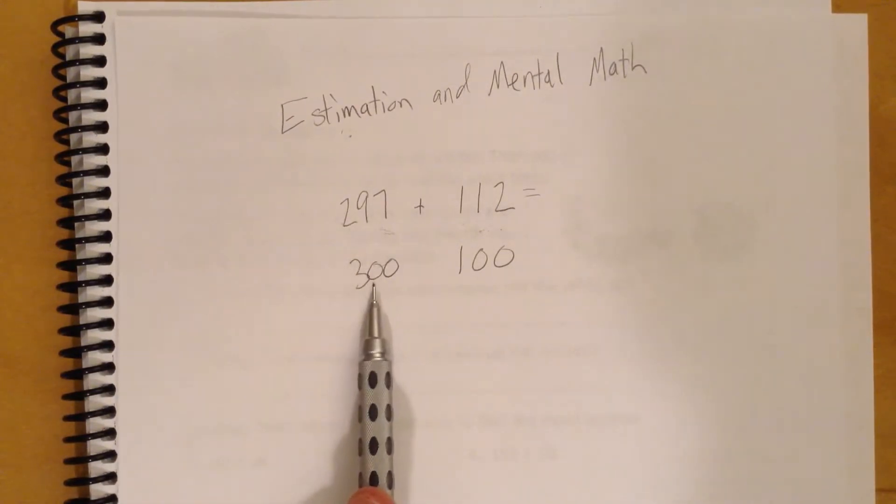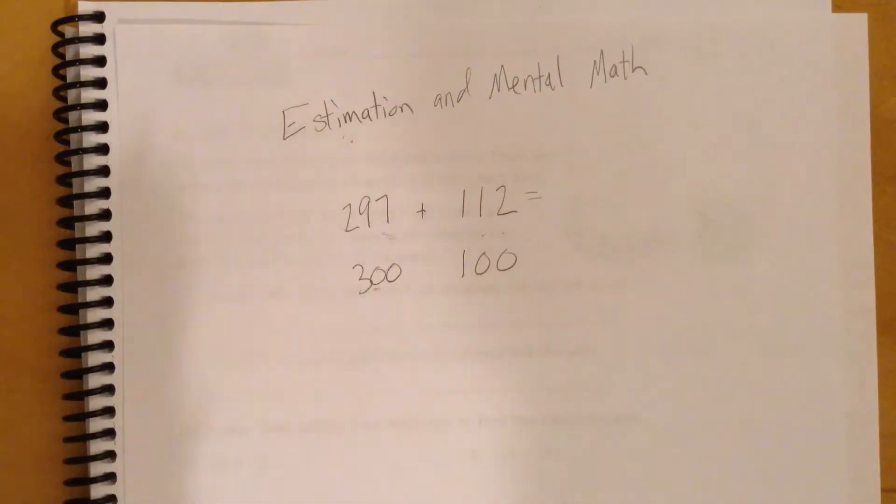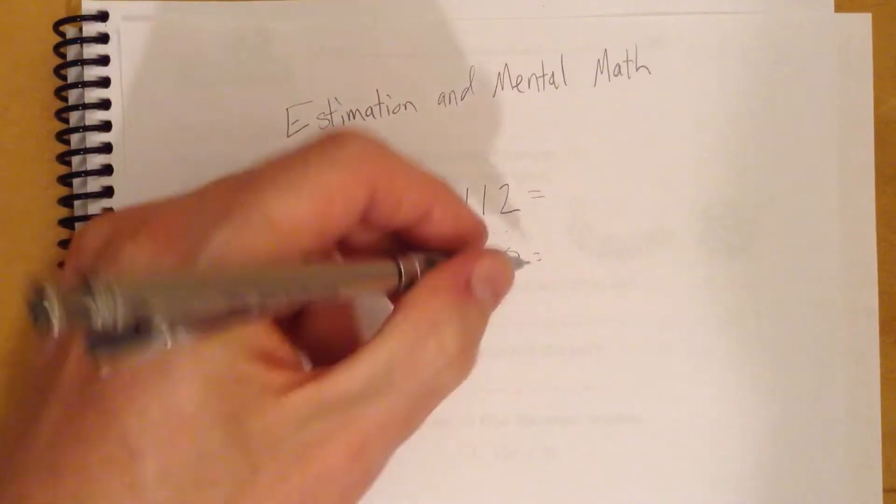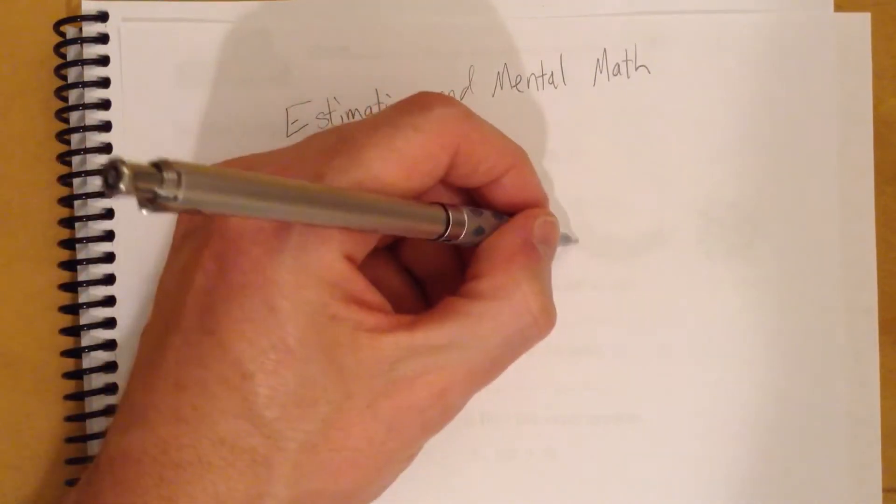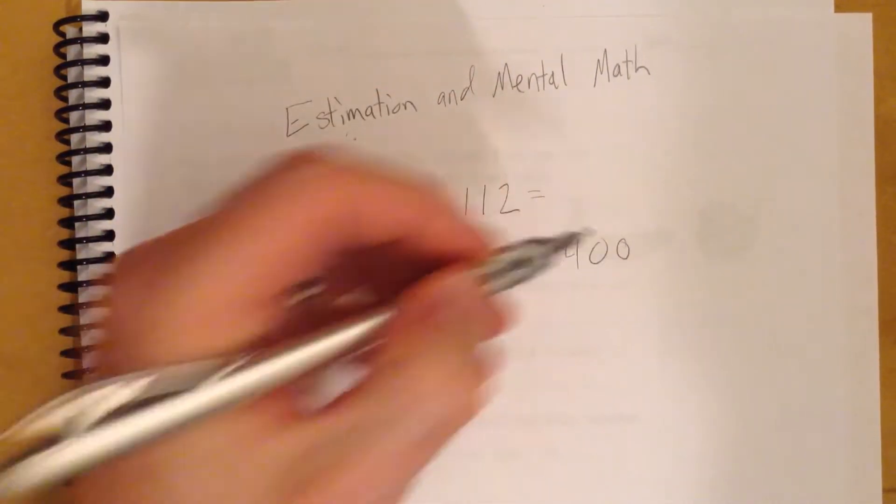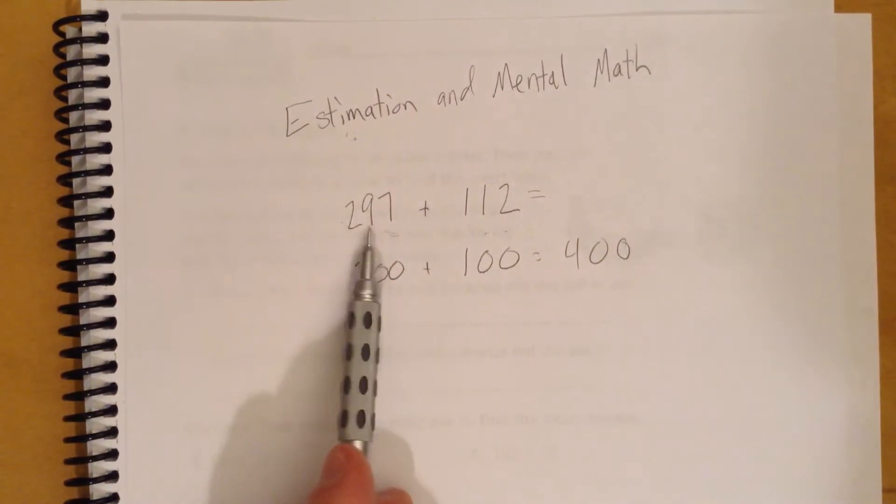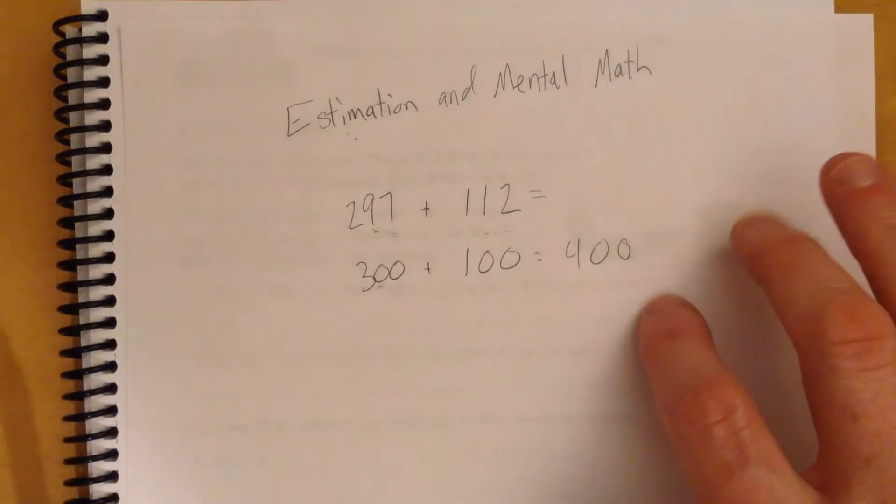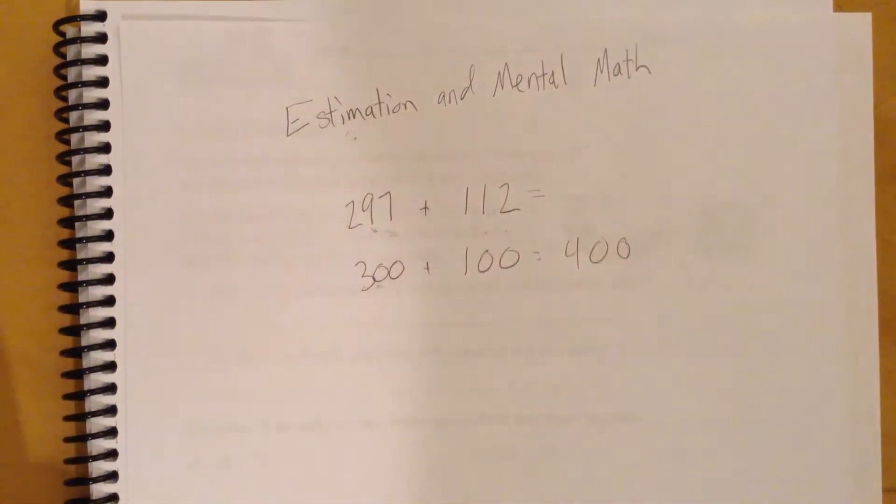Because we have the estimate here and the estimate here. Now, really, we could do this in our head as well, but for the sake of this, I'm going to actually show you. So I'm just going to say the 300 plus the 100 is 400, okay? So the answer to this is going to be about 400. Now, is it exactly 400? No, of course not.